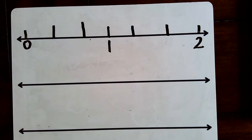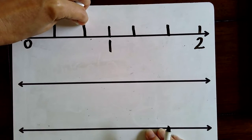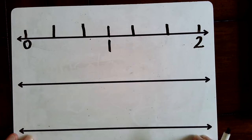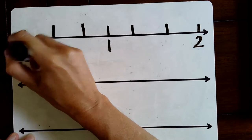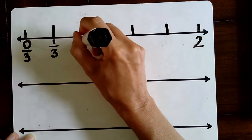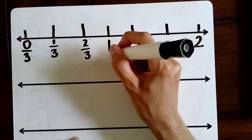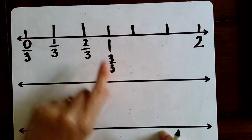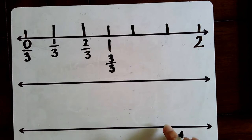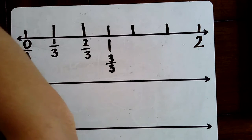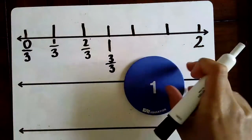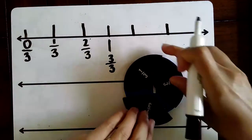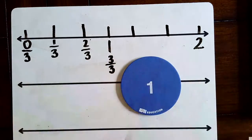Now, the labeling part. We know that between each set of whole numbers there are three parts, so the number line is divided into thirds. Let's start with zero thirds, then one third, two thirds. I already have a whole here, and it makes me happy to see that three thirds fits here because three thirds is the same as a whole. Anytime the numerator and denominator are the same, that's going to give me a whole — and I'm going to prove that using the circle fraction. One third, two thirds, three thirds. Three thirds is the same as one whole.